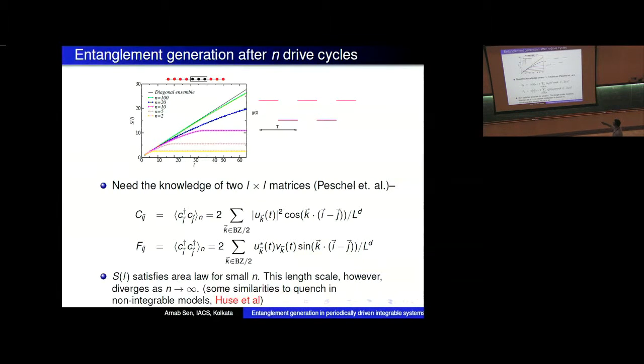From that you can construct the entanglement entropy and all local correlation functions. Here you can see the entanglement entropy as a function of number of drive cycles. As you can clearly see, when n is small, number of drive cycles is small, there's obviously an area law. In one dimension area law would just say that it's l^0, so as a function of subsystem size this entanglement entropy saturates.